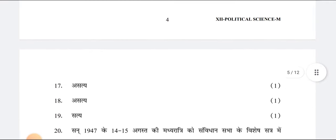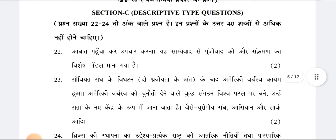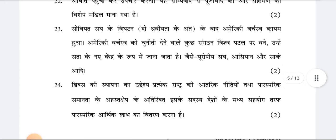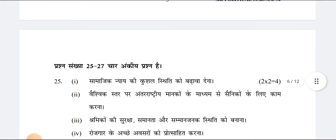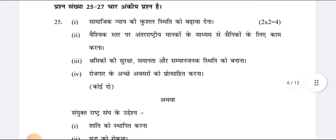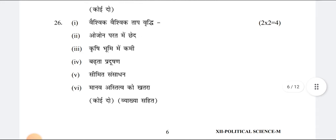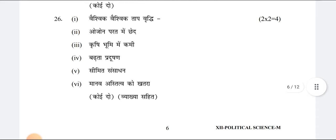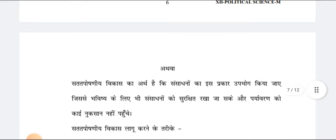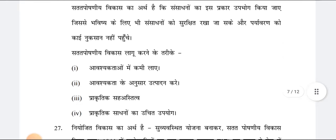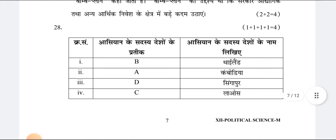Section C questions required answers in 40 words and carry two marks. Questions 25 to 27 carry four marks. Question number 25 was given as a four-mark question, and question number 26 had 6 points for two marks each, requiring explanation. Question number 27 was also given as a four-mark question.